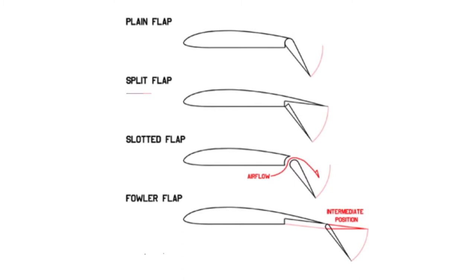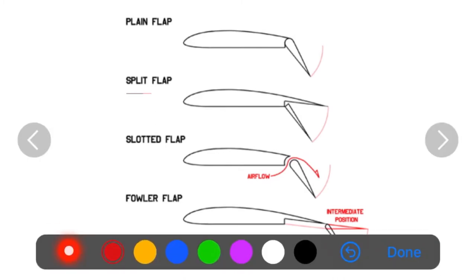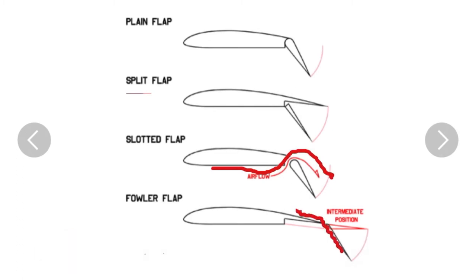Looking at the increase in lift due to flap extension: a plain flap gives about 50% increase in lift. A split flap gives up to 60% higher lift production because it does not disturb the airflow on the upper surface. A slotted flap, by allowing air to flow over it, can give 65% higher lift. A fowler flap, which deflects downward with a gap and also moves backward increasing surface area, can almost double the amount of lift being produced.